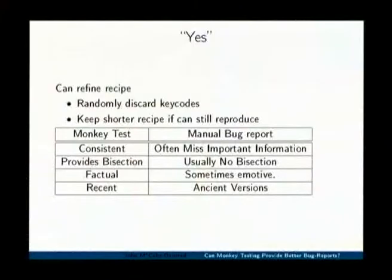Another advantage is that users generally report bugs against a stable version of the software, which from the point of view of the developers is ancient. I remember back when I started using Linux, the KDE project wouldn't accept any bugs from any version that was actually distributed in a distribution. So developers really like to have bugs against recent versions.